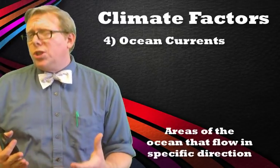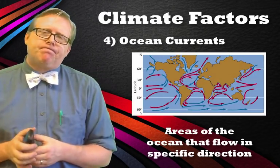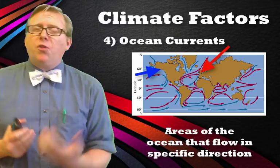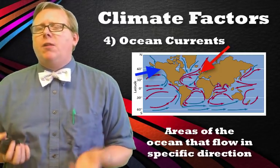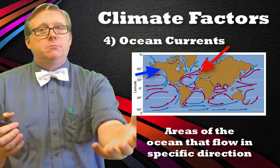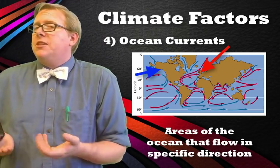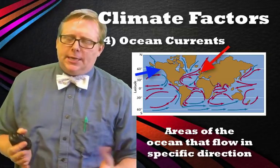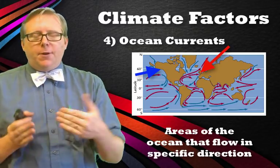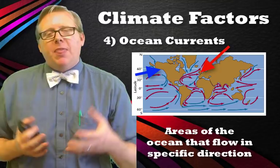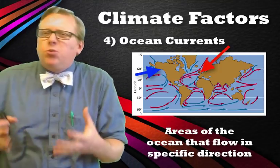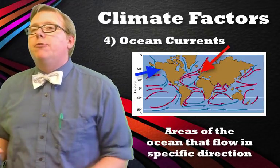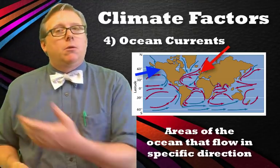The fourth factor is ocean currents. Look at a map comparing London, England and Anchorage, Alaska — they're at roughly the same latitude and both near the ocean, so you'd expect similar climates. But they're very different. When we think of London we don't think of snow and glaciers, but we do think that of Alaska. The reason is that England has a warm ocean current flowing right past it, bringing warm water that moderates the climate. That warm current is why people can live there comfortably instead of it being an icy, cold place like northern Alaska.